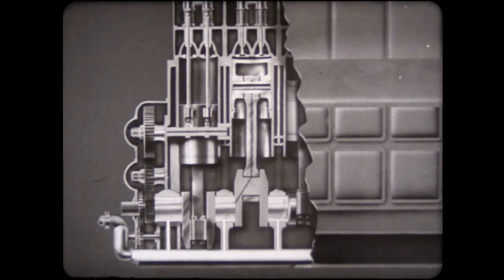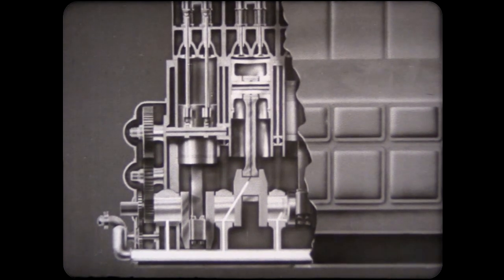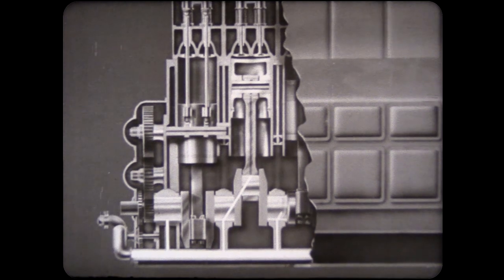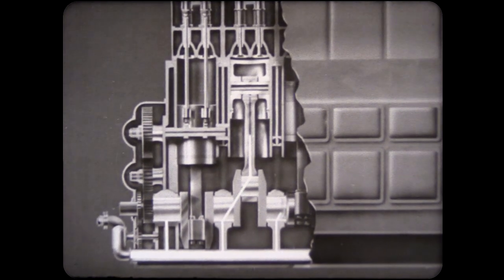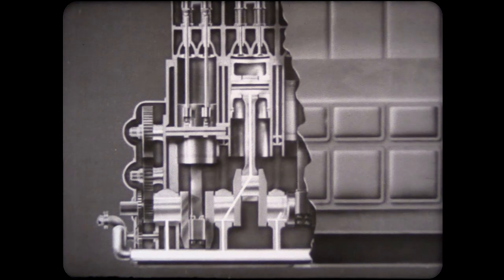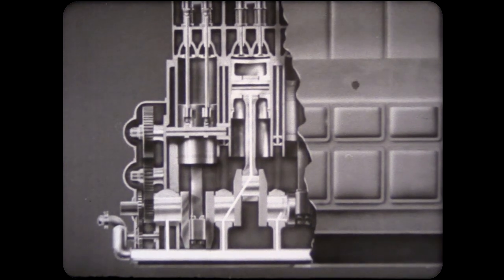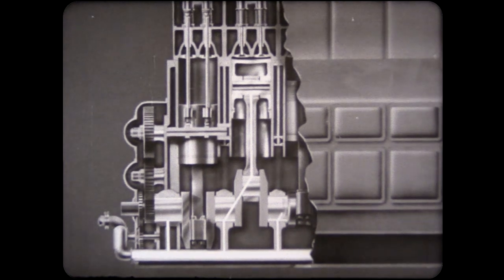Then passages drilled in the crankshaft lead the oil from the main bearing to the crank bearing. It then flows upward through a drilled passage in the connecting rod to the piston pin bearing. After lubricating the piston pin bearing, the oil drains out at either end.